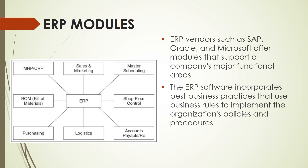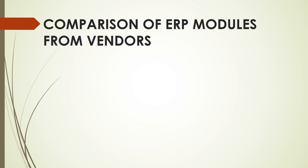Another example may be policies where an organization requires employees to work with a preferred list of vendors. Looking at the figure, we see there are different activities where ERP can perform, including MRP or CRP, sales and marketing, master scheduling, shop floor control, accounts payable and receivable, logistics, purchasing, and bill of materials. Let's take a look at some of the comparisons of ERP modules from vendors in different specific activities or operations in an enterprise.